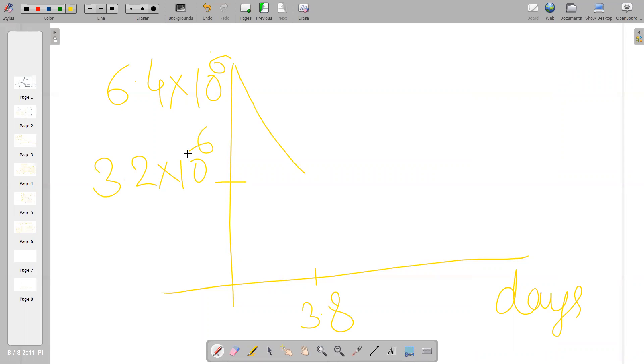Again, after an interval of 3.8, that is at the end of 7.6 days, it will become half of 3.2×10^6. So that is 1.6×10^6.